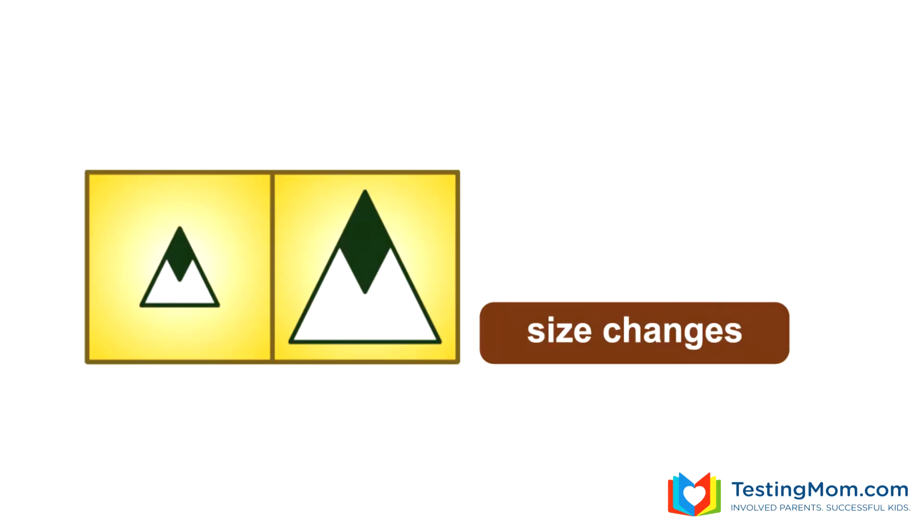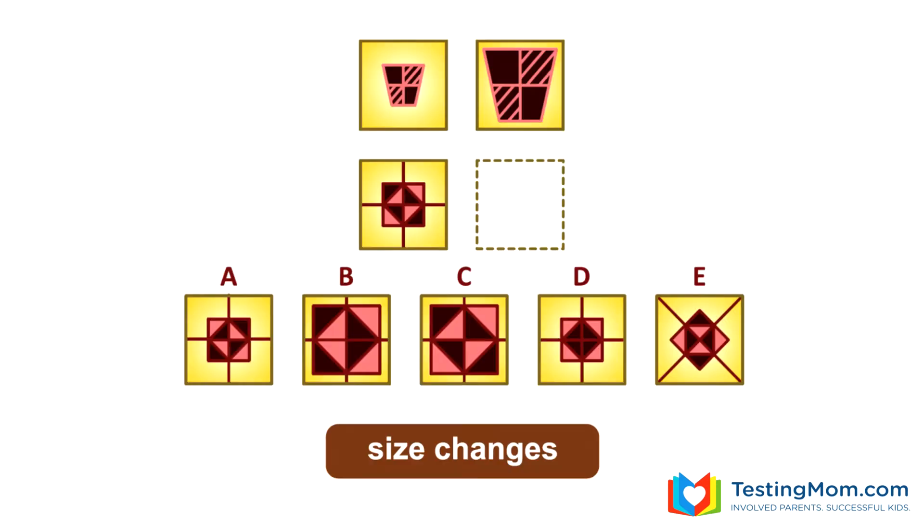Here the rule is that the figures change size from the left box to the right box. And here is an analogy puzzle where the figures on top change size. So on the bottom, we're looking for the same figure on the left, only it needs to be bigger, a size change. C is the answer.